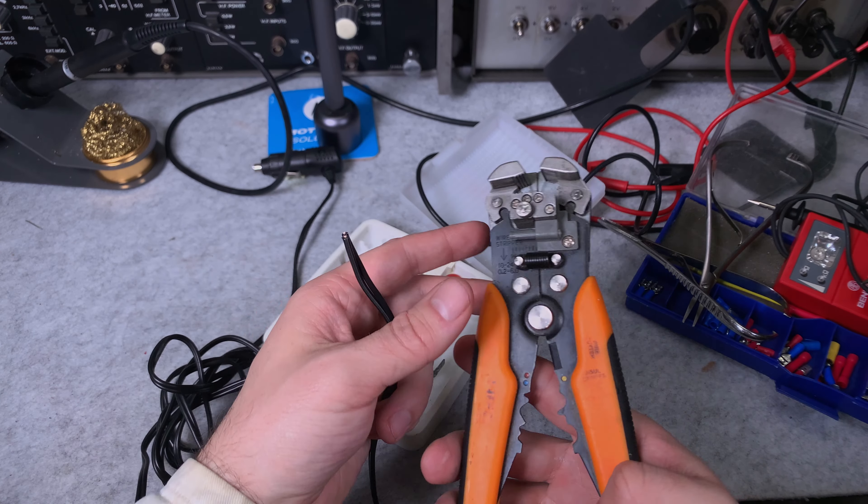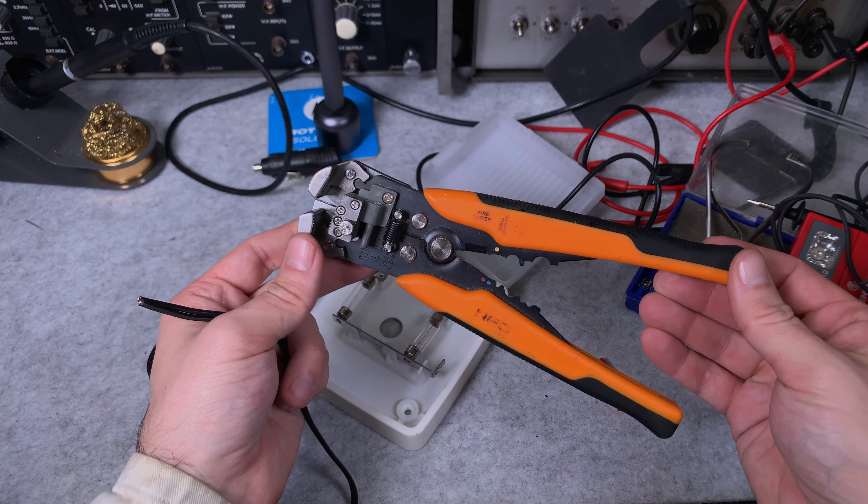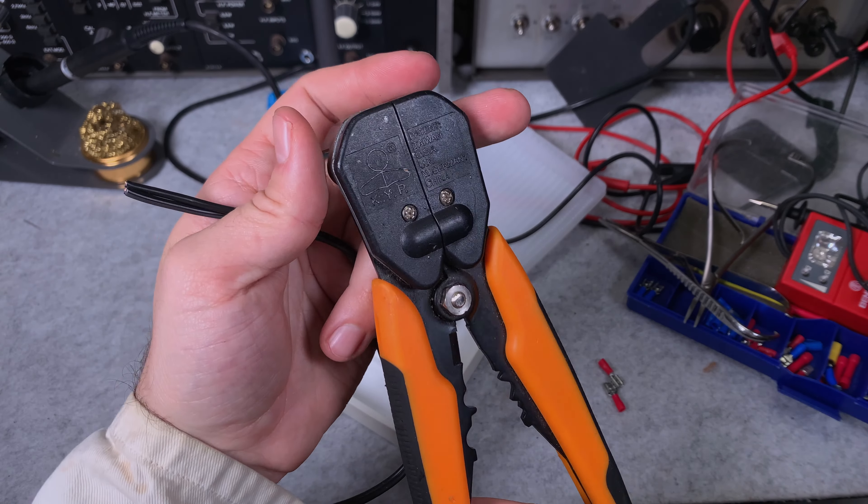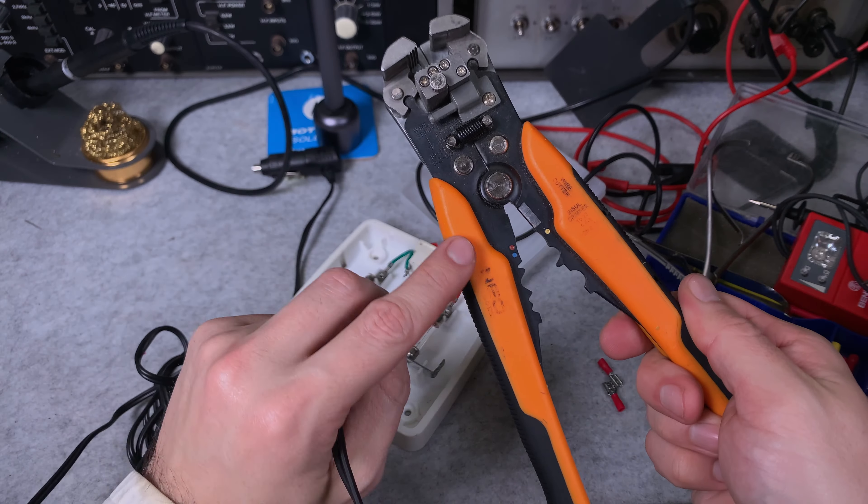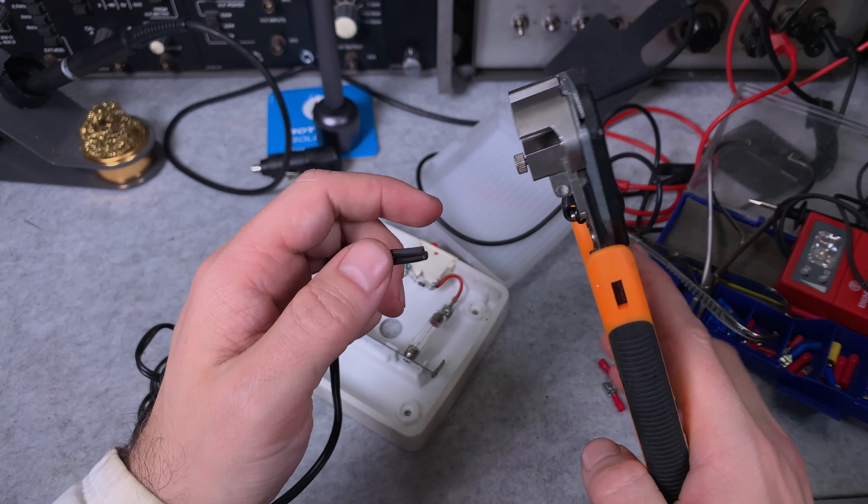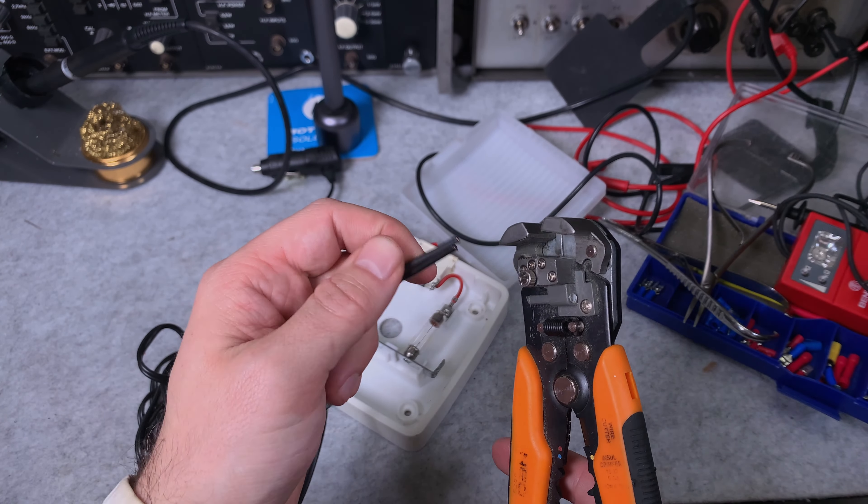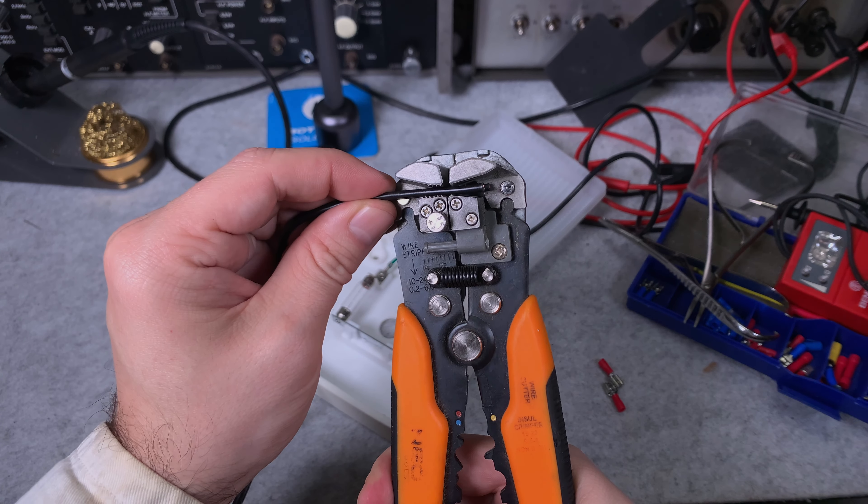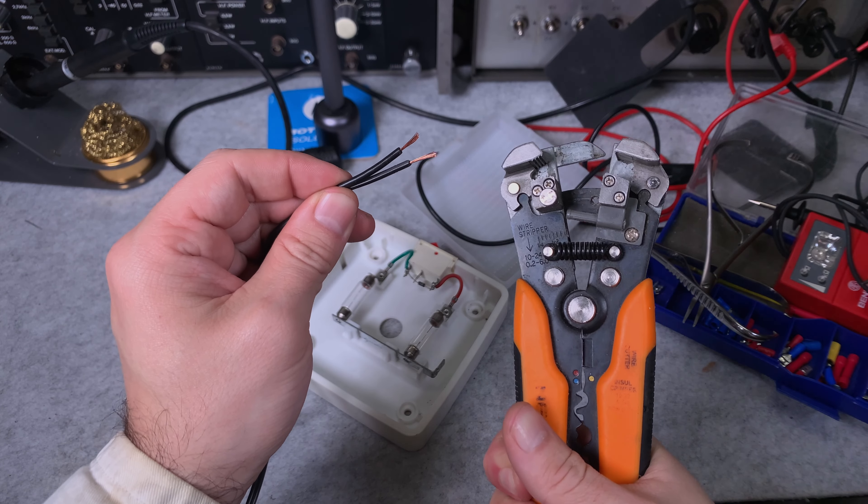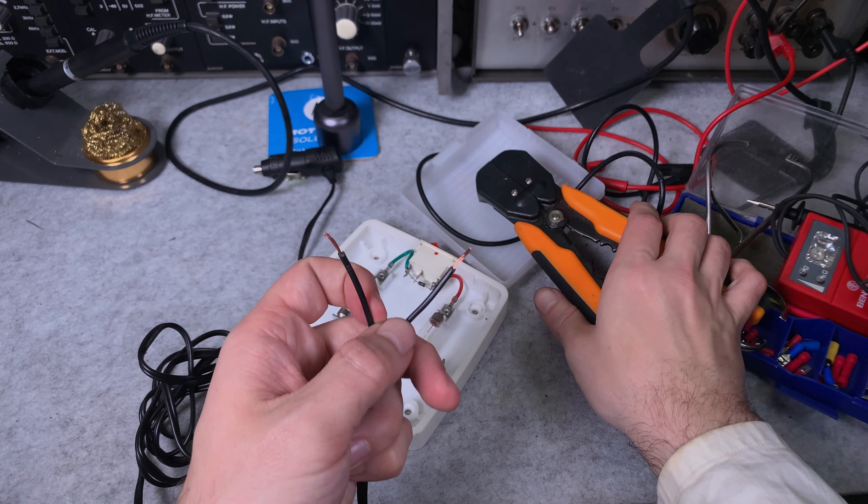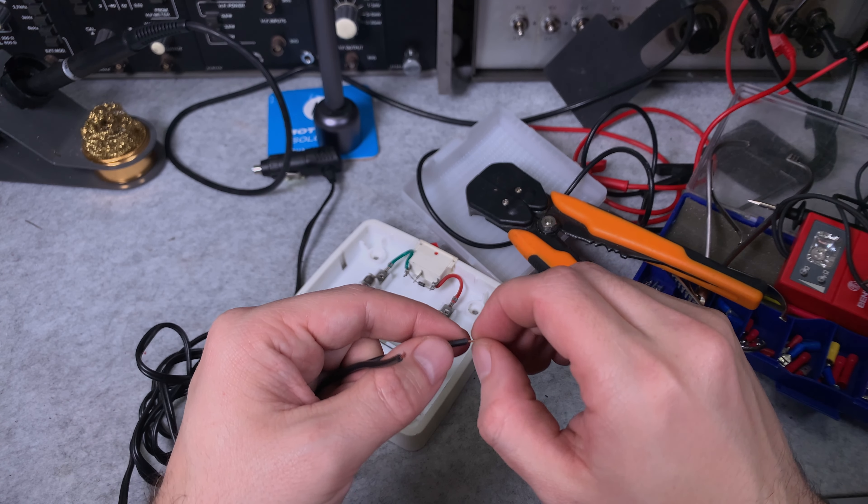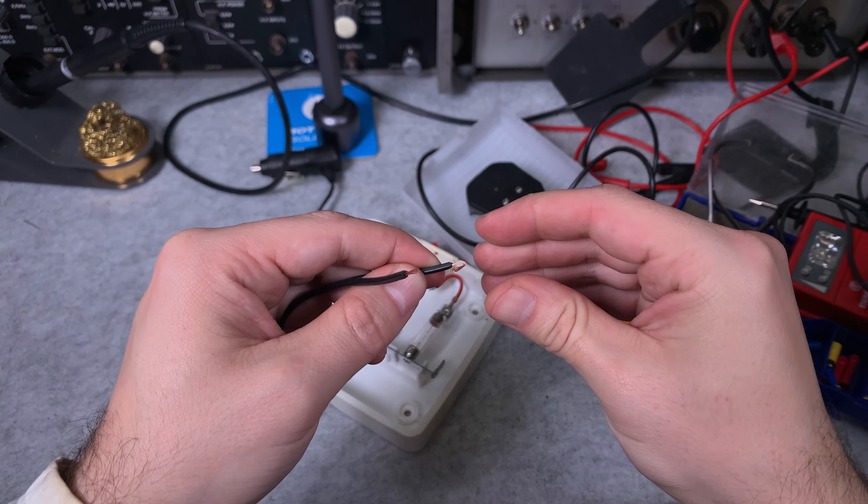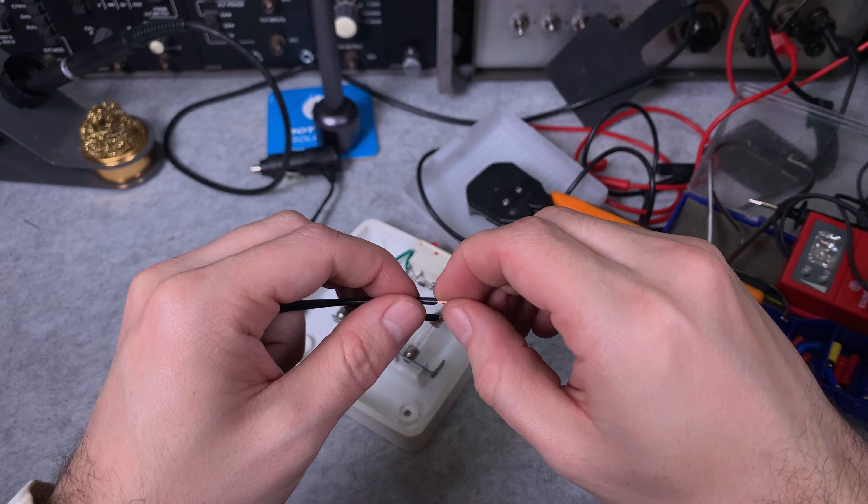When we talk about removing insulation, in my personal opinion this is the best stripping tool. This is the real manufacturer. You can grab like here two wires, you squeeze, you squeeze, and it's done. Because the wire is very thin, I'm going to create a double loop.